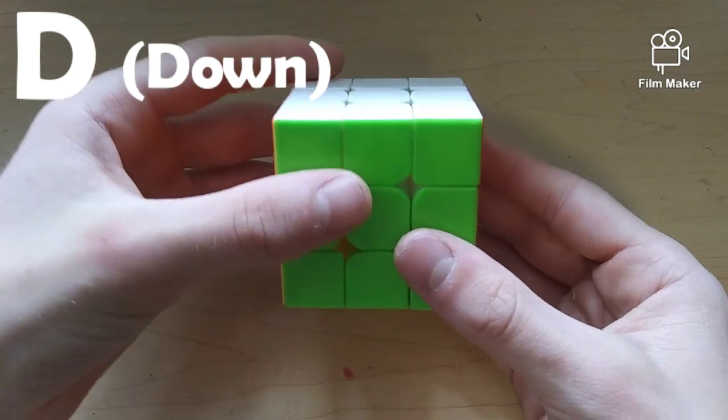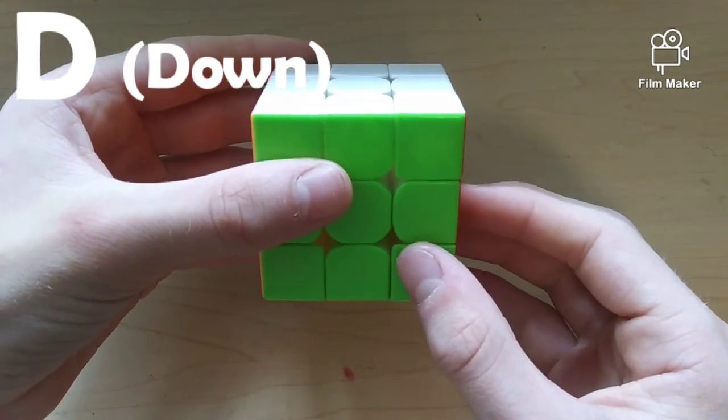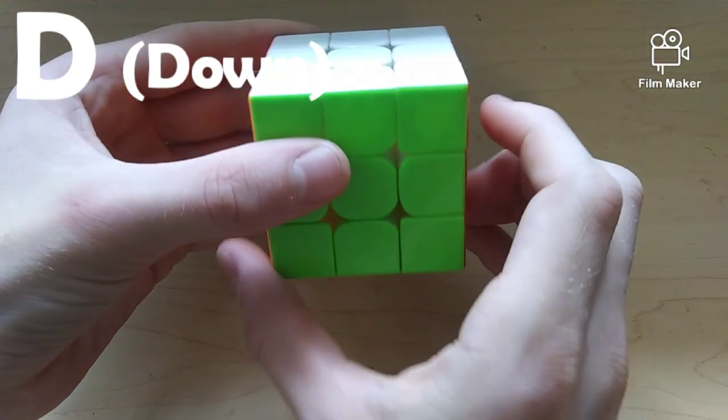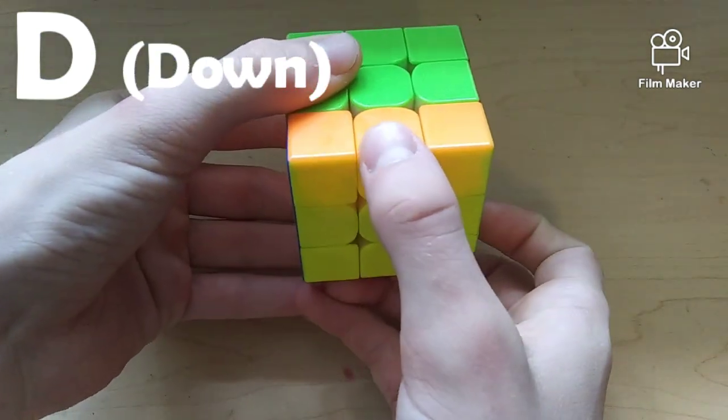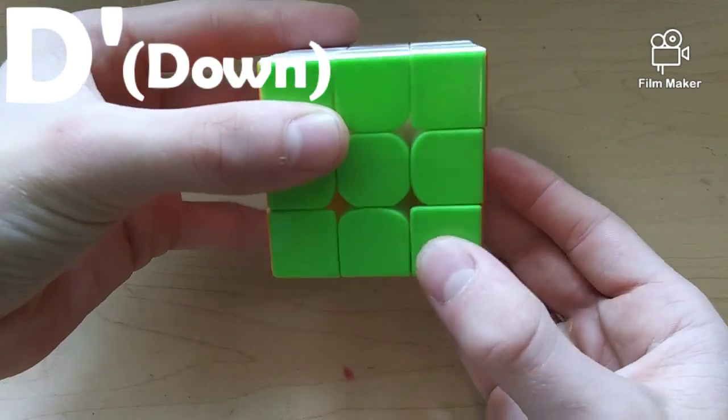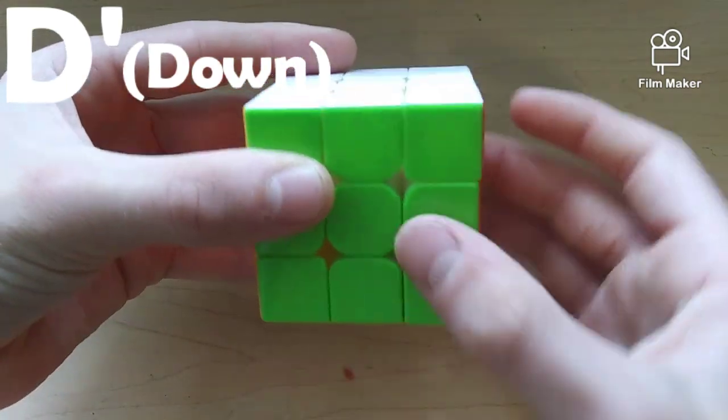And opposite of U, we have D, which stands for downside. So, we're going to look at the bottom and you're going to move it clockwise. See, we're moving it clockwise. Counterclockwise would be the opposite direction. Look at that. So, that is D'.